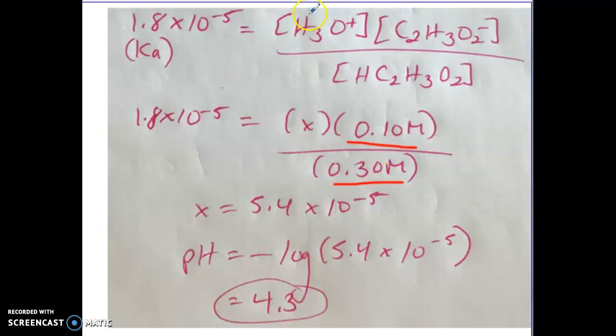So we're solving for hydronium. It's the same equilibrium so it's the same K value. You have your acetate, you have your acetic acid, and then we solve for pH.